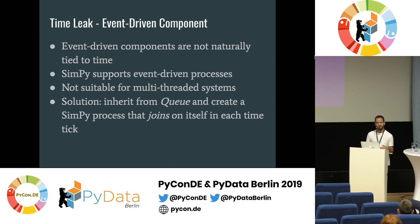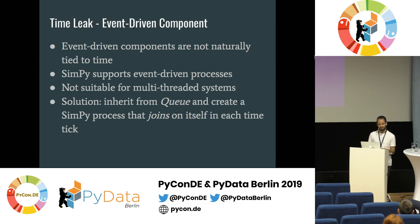We chose to solve it our own way. In simulation, we run another SimPy process that in every time tick holds the simulation time and lets the event-driven thread do its work. We do this by calling the join function on the queue of the event-driven thread — the join function blocks until the queue gets empty. That's how we stop time from running too fast.